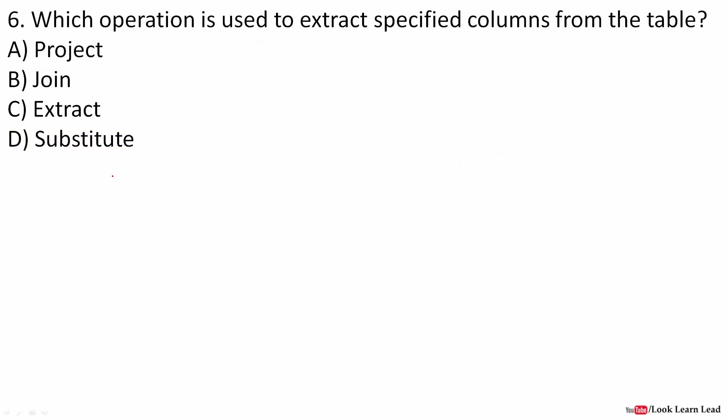Which operation is used to extract specified columns of the table? These are not a command. Join operation joins two tables, two relations. Project is used to extract columns, whereas select operation is used to extract rows or tuples. So the answer is project for columns.